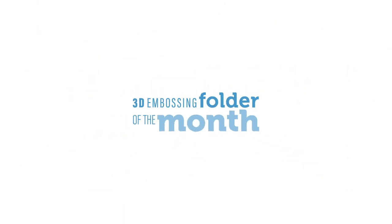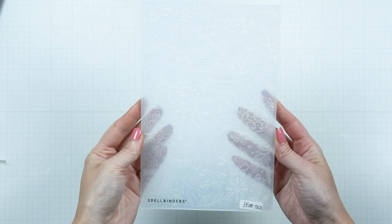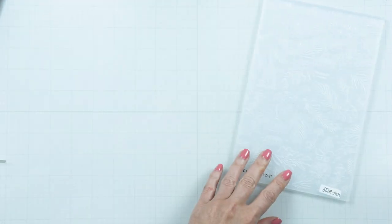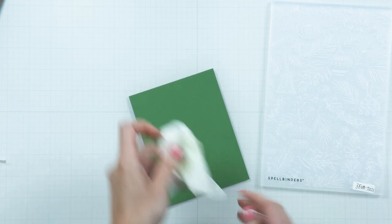Welcome to Spellbinder's July 2023 3D Embossing Folder of the Month! This folder measures 5.5 x 8.5 inches and works great for various card sizes.